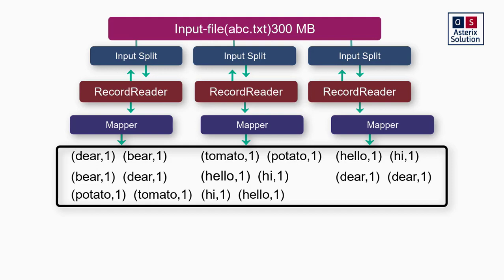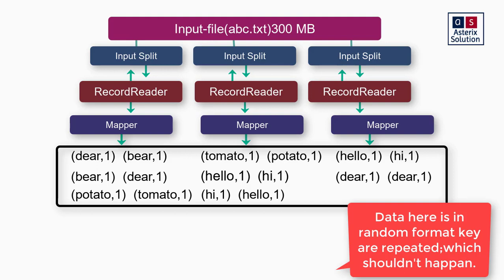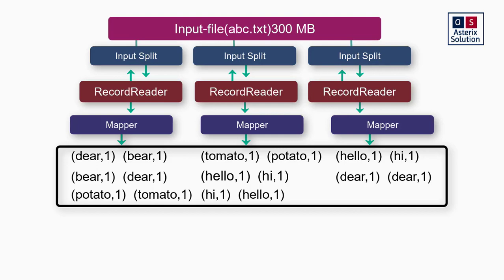For example, deer will be emitted as one, beer will be emitted as one — each word-occurrence pair emitted individually. The data from record reader to mapper was given in the format of LongWritable and Text. I write logic to break the line on spaces and emit each word with value one. So the output of mapper one would be: deer 1, beer 1, beer 1, deer 1, potato 1, tomato 1. Mapper two: tomato 1, potato 1, hello 1, hi 1, hi 1, hello 1. Mapper three: hello 1, hi 1, dear 1, dear 1.